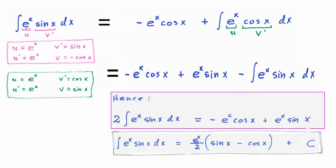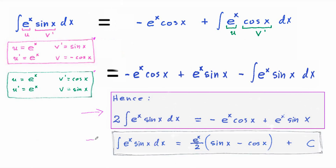To integrate the function e to the x times sine x, we also use integration by parts 2 times in a row. As a result, we get an equation which is 2 times the initially given integral. So to evaluate the initially given integral, we just need to divide by 2 and add the constant of integration, as shown below.